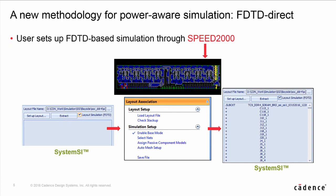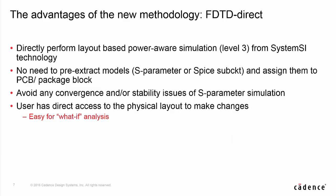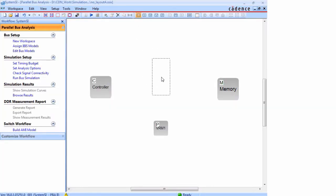在系统级，我们直接打开physical layout，选择并且设置信号、去耦电容和仿真参数。然后，从SystemSI当中，启用基于时域有限差分方法的仿真器。在仿真完成后，使用和提取模型相同的方式处理并且报告结果。有了这个工作流程，用户就不需要预先提取模型，有助于避免SPICE时域仿真器的某些收敛问题。更重要的是，用户可以便捷地在系统级分析当中修改PCB的layout来进行假设分析。